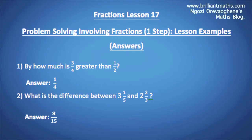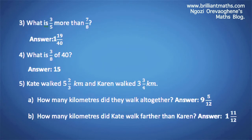Question 1: By how much is three-quarters greater than half? The answer is one-quarter. Question 2: What is the difference between three one-fifths and two two-thirds? The answer is eight over fifteen. Question 3: What is three-fifths more than seven-eighths? The answer is one whole number and nineteen over forty. Question 4: What is three-eighths of forty? The answer is fifteen.